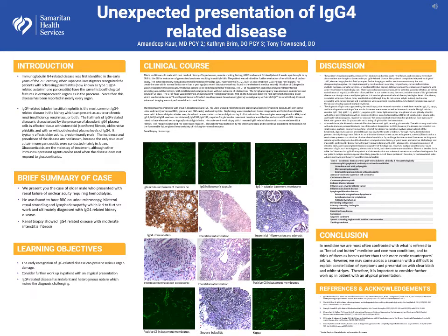This disease can be found in any organ and has a strong association with autoimmune pancreatitis, but typically does not present with renal failure. The diagnosis of IgG4-related disease can be challenging due to its indolent and heterogeneous nature.